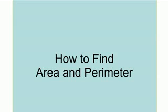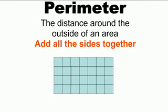This lesson is going to be over how to find area and perimeter of regular and irregular shapes. Let's review. Perimeter is the distance around the outside of a shape. You add all the sides together.